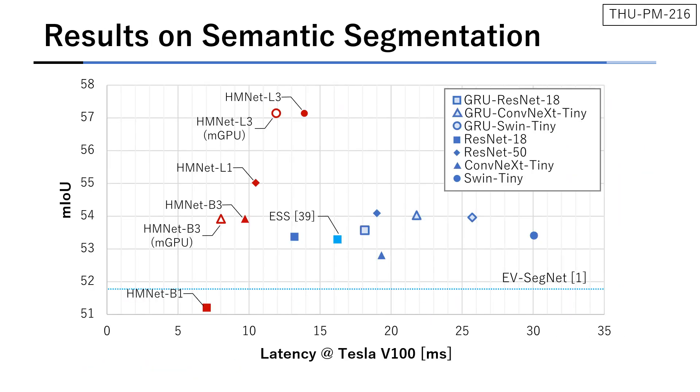Here are the experimental results on semantic segmentation. The horizontal axis shows latency, and the vertical axis shows mean IOU. The proposed models are shown in red dots and the previous ones in blue. As we can see, the HM net outperforms the previous methods on both accuracy and latency.